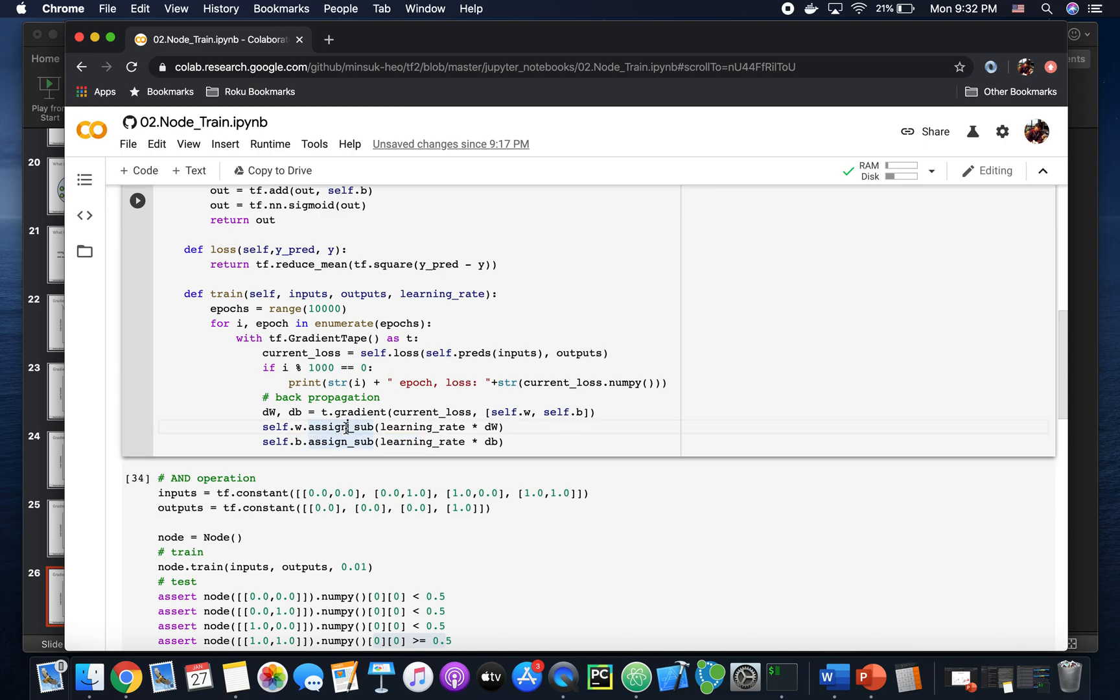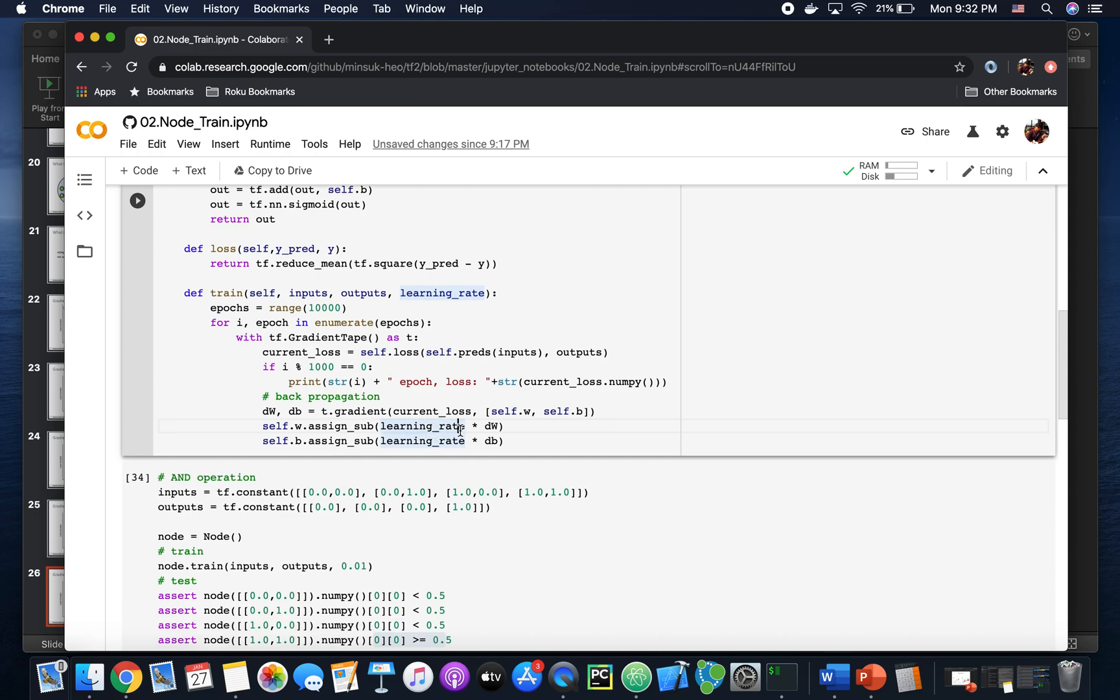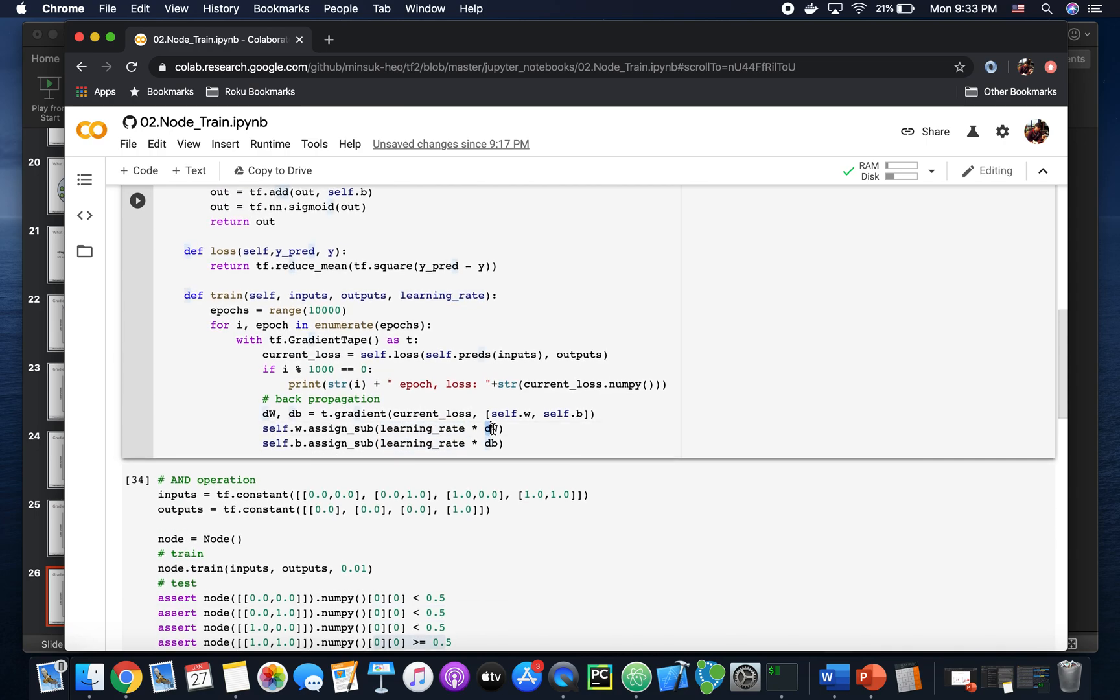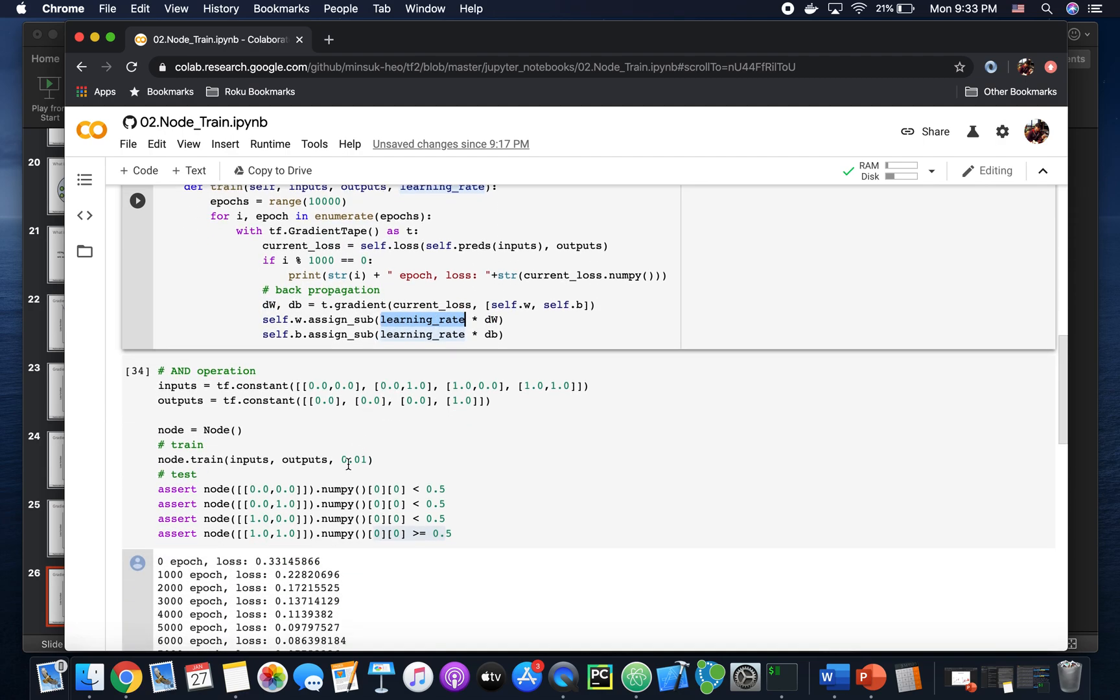This assign_sub is nothing but on the old weight value, we just subtract this learning rate times derivative of weight in here. And you can see the learning rate, I gave the 0.1 in this code. Okay.